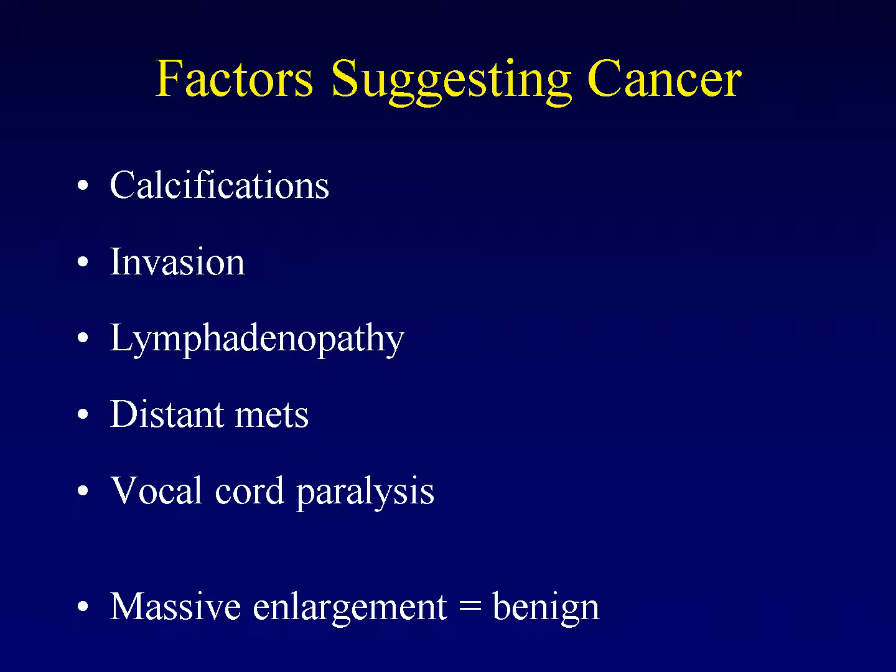What are some of the factors that would suggest cancer within a thyroid mass? There are some types of calcification that would suggest cancer. Specifically, fine speckled calcifications are suggestive of papillary thyroid carcinoma. These calcifications are the same calcifications that we see in breast cancer — histopathologically, they are comedocalcifications. They also appear in papillary thyroid carcinoma.